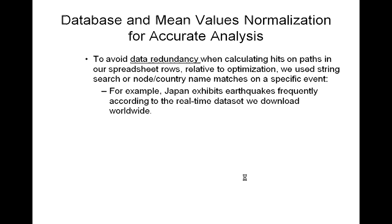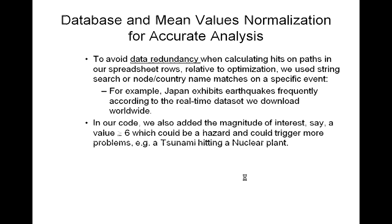For example, Japan exhibits earthquakes frequently according to the real-time data set we downloaded worldwide. In our code, we also added the magnitude of interest — say a value greater than 6 would be a hazard and could trigger more problems.